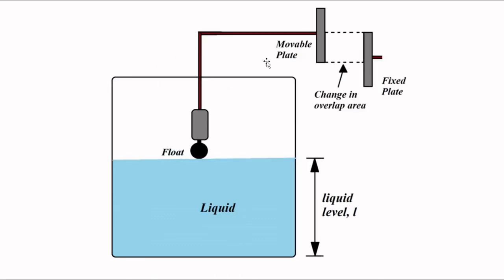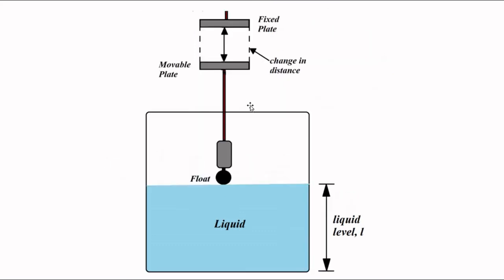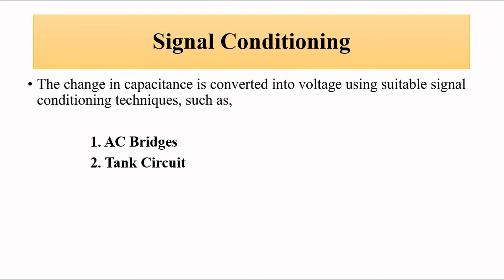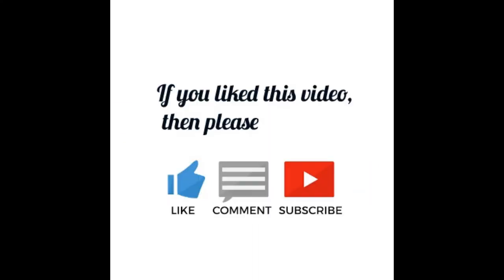In the first arrangement, lateral (sidewise) movement of the plates leads to a change in overlapping area. In the second arrangement, up and down movement of the movable plate leads to a change in distance. In both cases, one plate is fixed and the other is movable. This concludes the level measurement with the help of capacitive sensors.